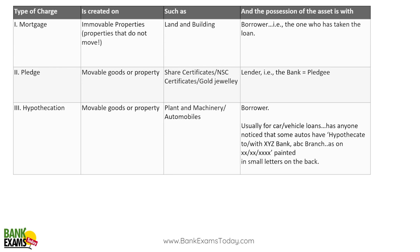Mortgage is generally created on immovable properties. Most housing loans are mortgages — on land and building. In case of a mortgage, the borrower has the possession. You take a housing loan, you get the possession of the property.